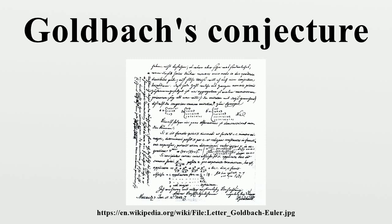For small values of N, the strong Goldbach conjecture can be verified directly. Nils Pipping in 1938 laboriously verified the conjecture up to N = 10^5. With the advent of computers, many more values of N have been checked. T. Olivera E. Silva is running a distributed computer search that has verified the conjecture for N = 4 times 10^18. One record from this search is that 33255817073333960528 is the smallest number that has no Goldbach partition with a prime below 9781.